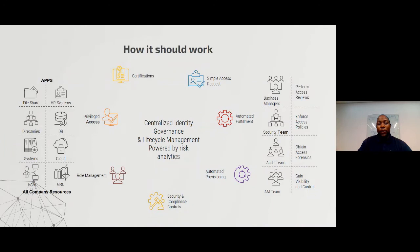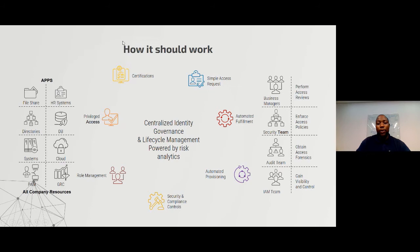There's a right-way approach to implement this. You should gather all the applications — examples include file shares, HR systems, directories, databases, and cloud access. Once you've gathered all these applications, you can start pulling all access currently existing on the systems. Then you should do system certifications: once you've gathered all the access, you can submit it to line managers to review whether their direct reports have the correct access.